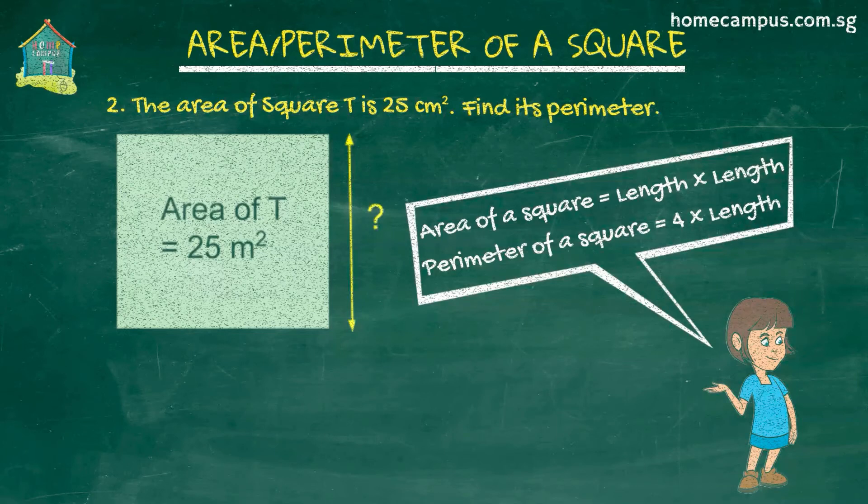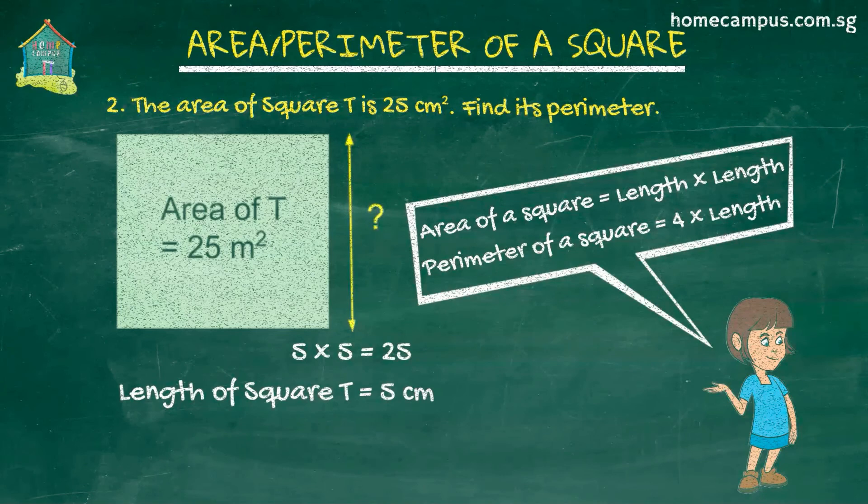This time it may come quick to you that 25 is 5 times 5. So the length of square T is 5 centimeters. Now that we have the length of square T, it's super easy to calculate its perimeter.